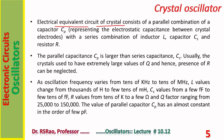Regarding the electrical characteristics of crystals: the electrical equivalent circuit of a crystal consists of a parallel combination of capacitor Cp — representing the electrostatic capacitance between crystal electrodes — and a series combination of inductor L, capacitor Cs, and resistor R. Parallel capacitance Cp is larger than series capacitance Cs. Crystals typically have extremely large Q values, so R can be neglected. Low dissipation means very small R.